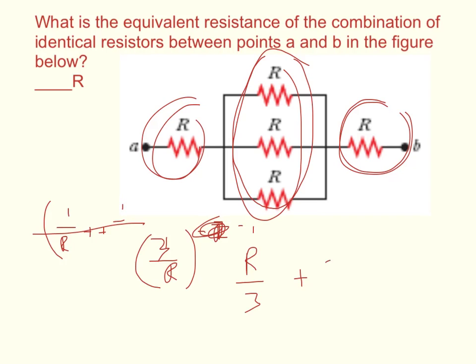So R over 3 plus 2R. So when you combine that, this is the same as saying 1 3rd R plus 2R is going to equal 2 and 1 3rd R, or 2.333.